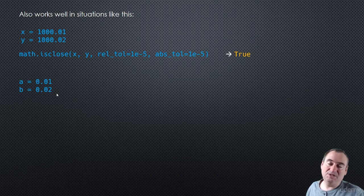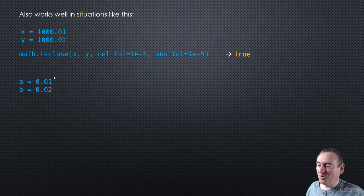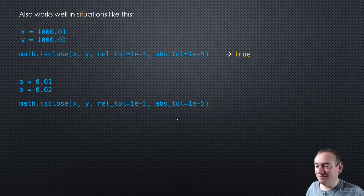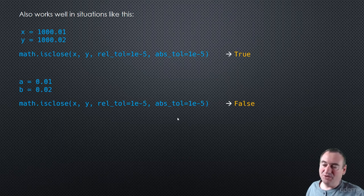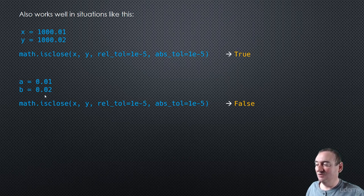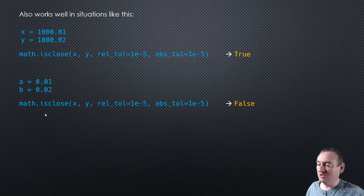If we look at math.isclose and specify a relative tolerance of 10 to the negative 5 and an absolute tolerance of 10 to the negative 5, that evaluates to true — which makes sense. However, look at these two numbers: 0.01 and 0.02 — they are also within 0.01 of each other, but we probably wouldn't think of those as being close because relatively speaking, that's a pretty big difference. And if we use the same expression with the same tolerances, then this will evaluate to false. That's the advantage of combining relative and absolute tolerances into one method.